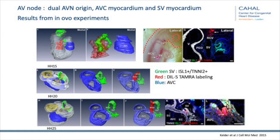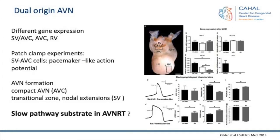Briefly on the AV node, we think it has a dual origin — the sinus venosus contacts the AV node, especially the posterior part. This is work from Tim Kelder, who followed the sinus venosus area in an in-ovo experiment where he dye-labeled the proximal sinus venosus and followed it during development. At later stages, that part touches the AV node on the posterior end. That area showed pacemaker potentials and both sinus venosus and AV canal gene expression. We hypothesize that is the posterior extension of the AV node, which may have sinus venosus origin and be a substrate for AVNRT.